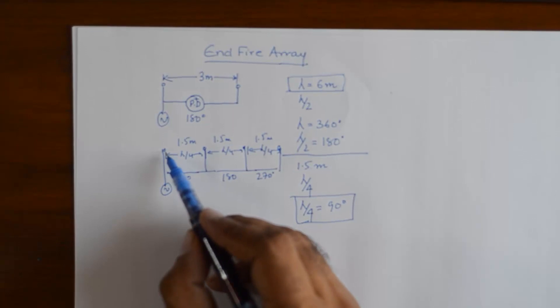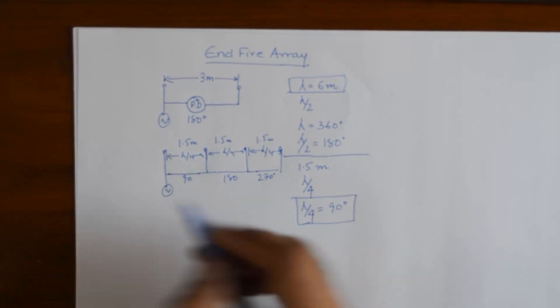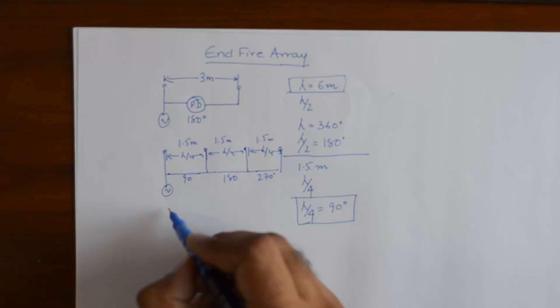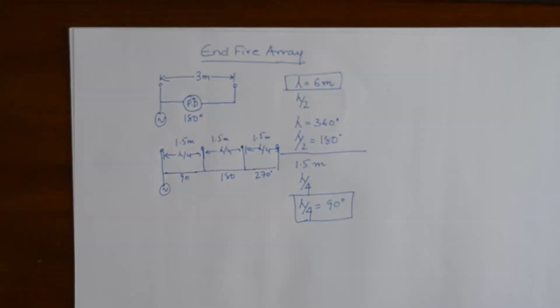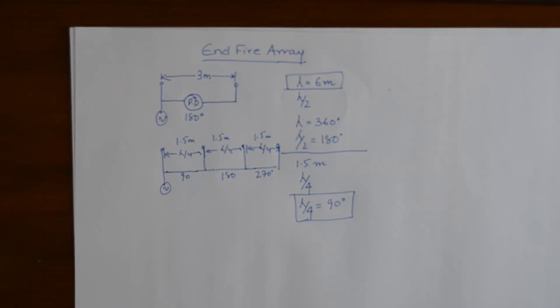So the first element would be given a signal starting from 0, the next element would be phase shifted by 90 degrees and next would be phase shifted by an additional 90 degrees that comes out to be 180 degrees with respect to the first one and so on and so forth.